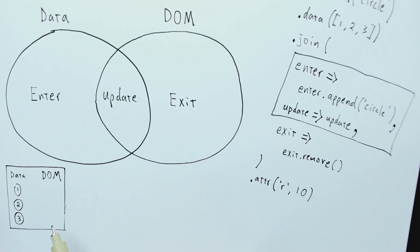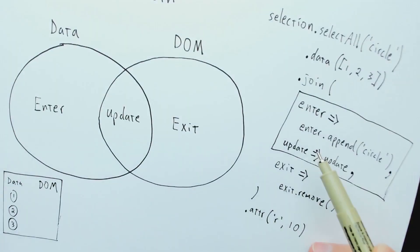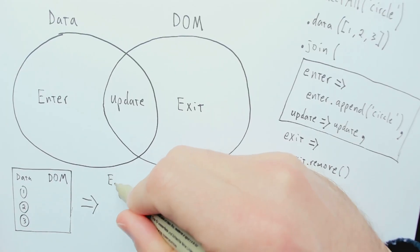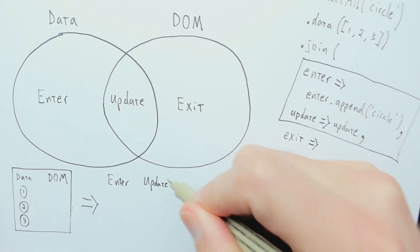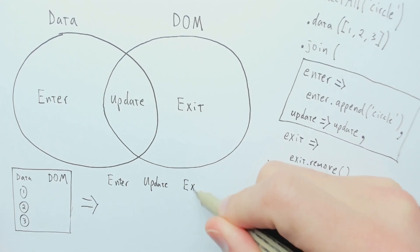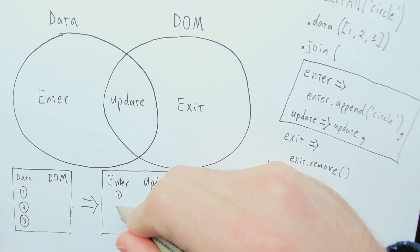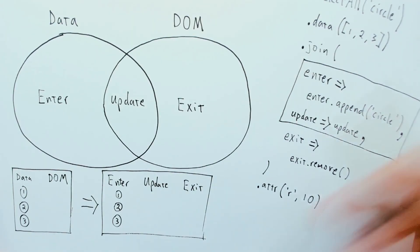Let's consider this case, where this code over here runs for the first time. There's data elements 1, 2, 3, but there are no existing DOM elements. What will we have for enter, update, and exit? Since there are no existing DOM elements for any of these, all of these will be part of the enter selection. And update will be empty. And exit will be empty.